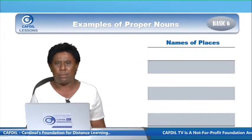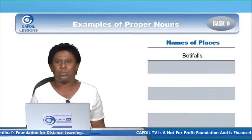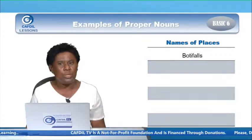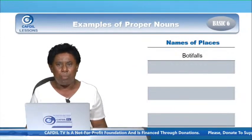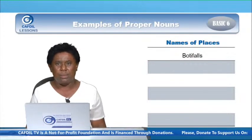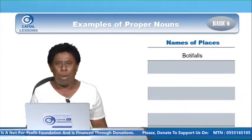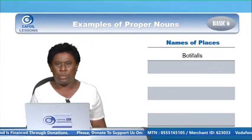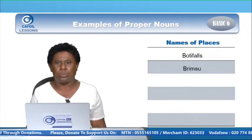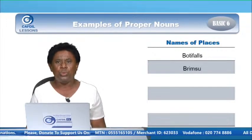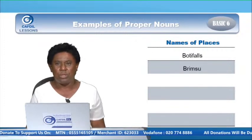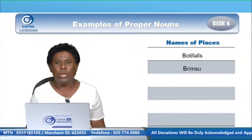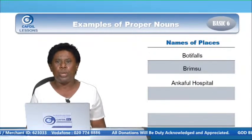We have names of places. Examples are: Boti Falls — it's a tourist site and a particular place with a name, beginning with capital B, because it's a proper noun. Brimso — where we have our water reservoir, a particular name given to that place, begins with capital B, because it's a proper noun.